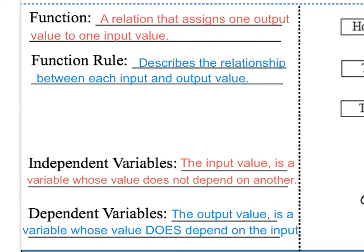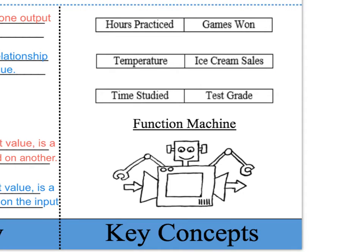I know I just threw a bunch of different vocabulary words at you. For independent variables, or for the input, think of people who are independent — they don't need anybody else to support them. However, for dependent variables, think about people who need other people to support them. So let's talk about these key concepts so that we can further explain independent variables and dependent variables.